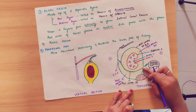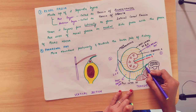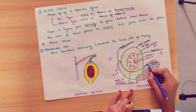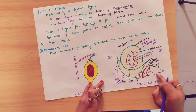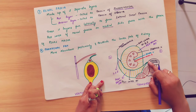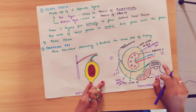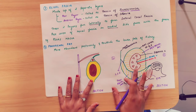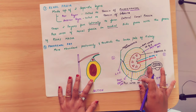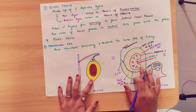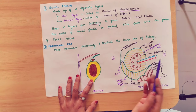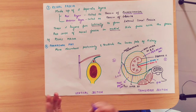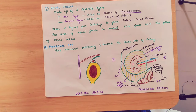The psoas major muscle has its own fascia, and the renal fascia blends with it medially to form the lateral conal fascia. So in summary: the anterior layer is the fascia of Gerota, the posterior layer is the fascia of Zuckerkandl, and the two layers fuse laterally to form the lateral conal fascia.